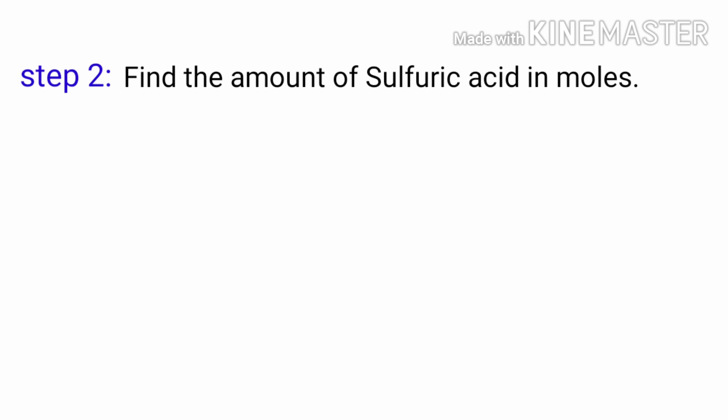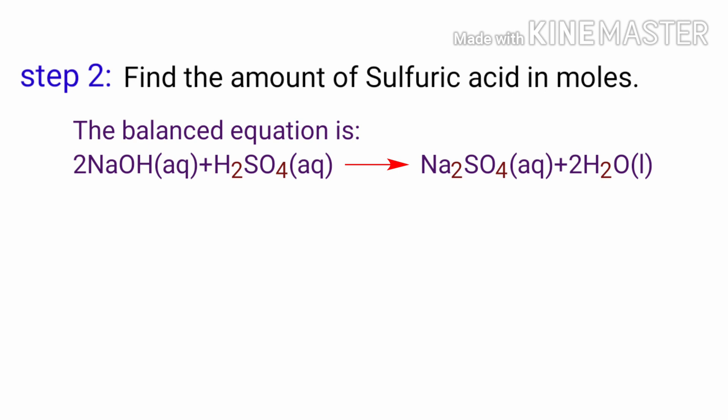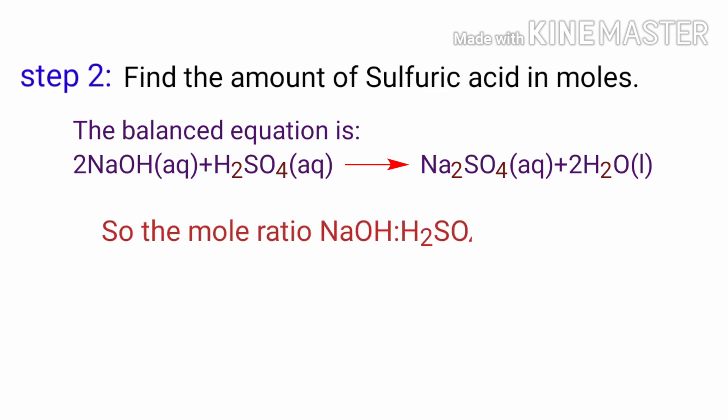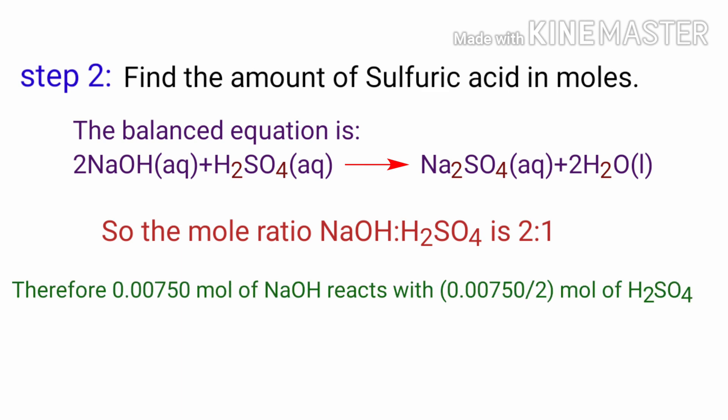Step 2: Find the amount of sulfuric acid in moles. The balanced equation is: 2NaOH + H₂SO₄ → Na₂SO₄ + 2H₂O. The molar ratio of NaOH to H₂SO₄ is 2:1. Therefore, 0.00750 mol of NaOH reacts with 0.00750 ÷ 2 = 0.00375 mol of H₂SO₄.